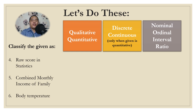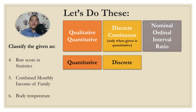Number 4: Raw score in statistics. You may pause the video to answer. The answer is quantitative because it is numerical, discrete because there are no decimals for raw scores, and ratio because it has an absolute zero point.